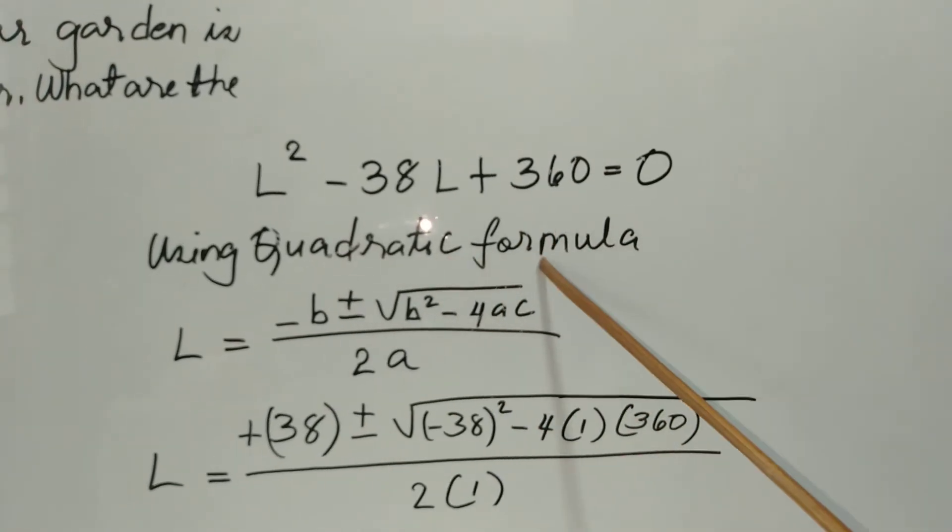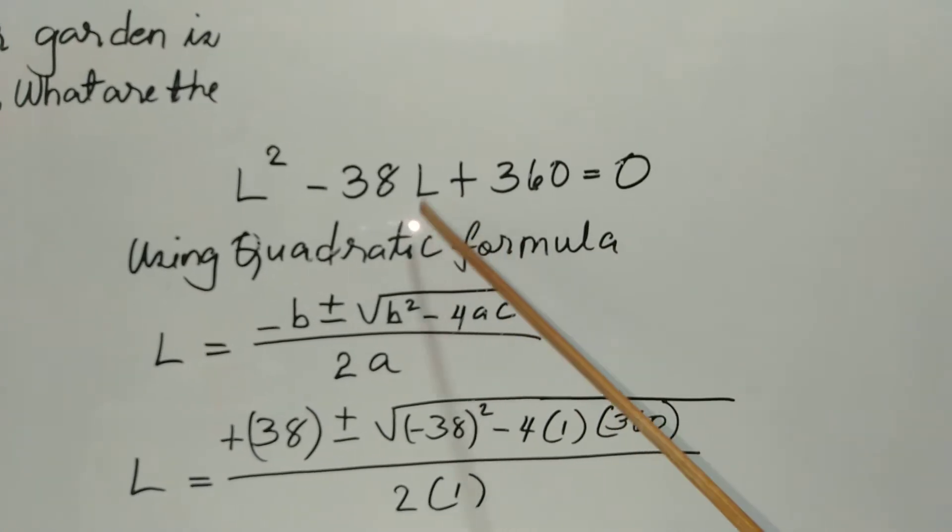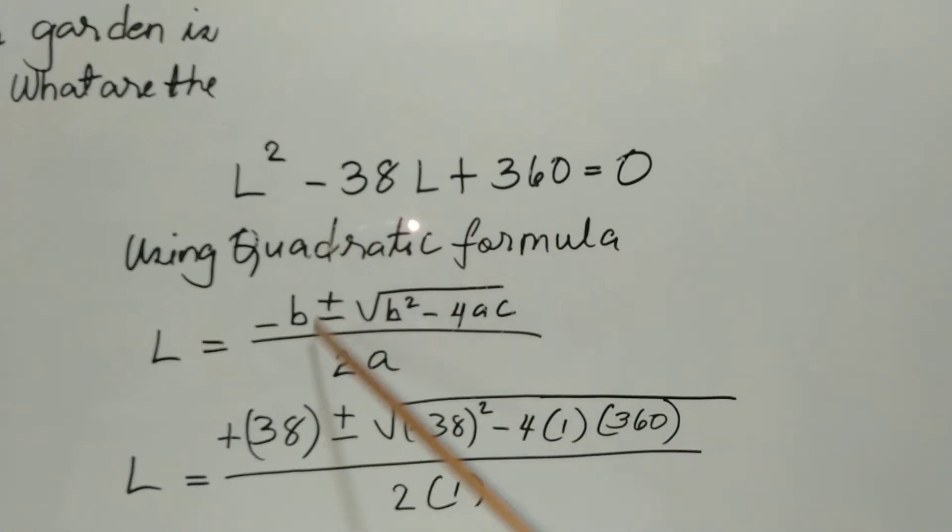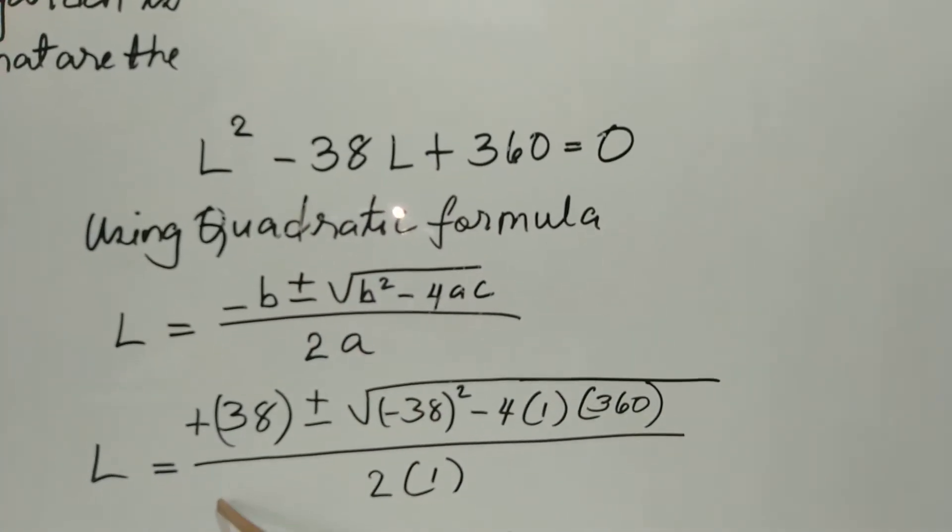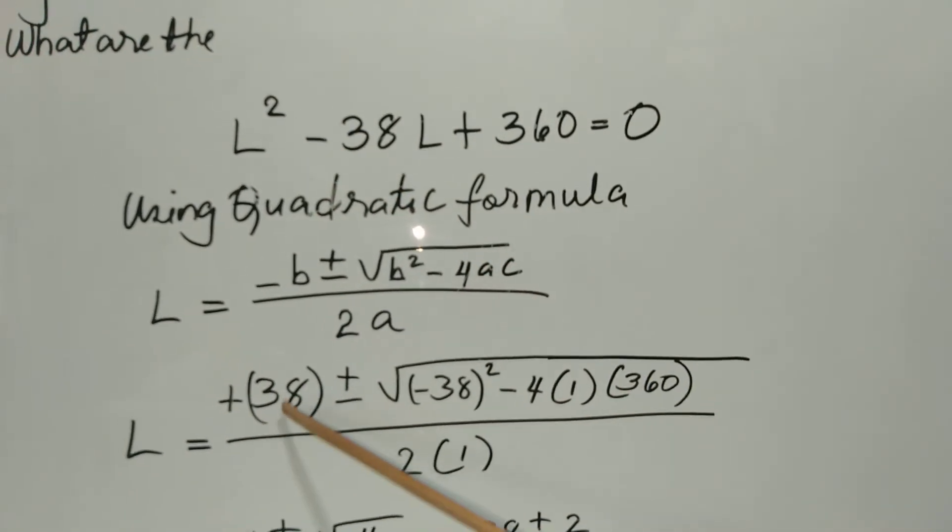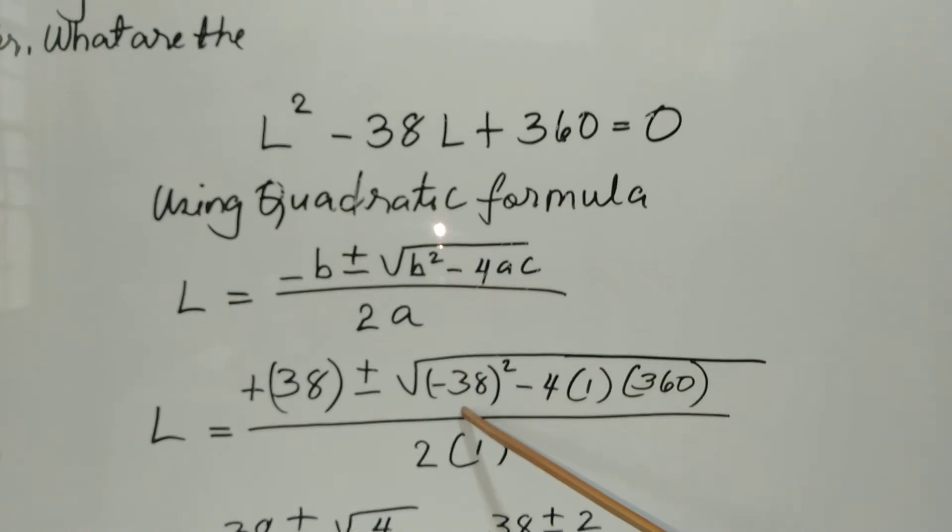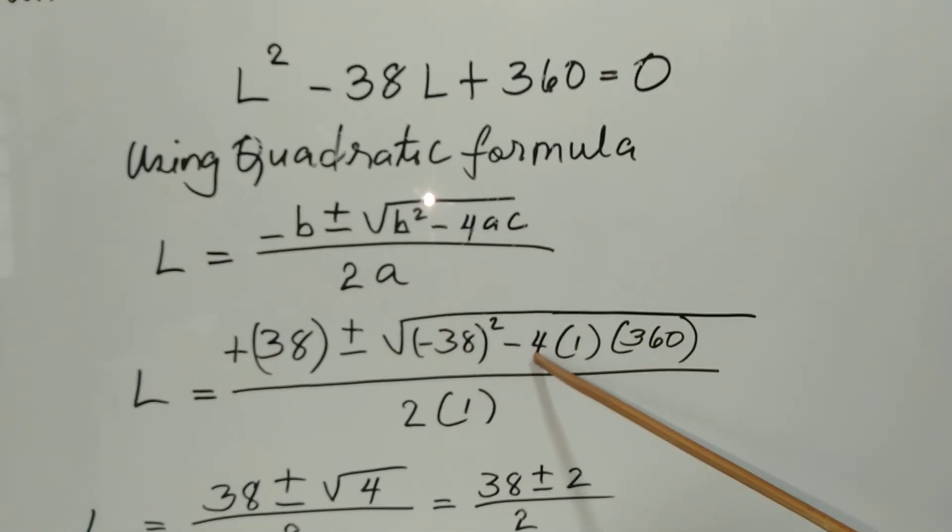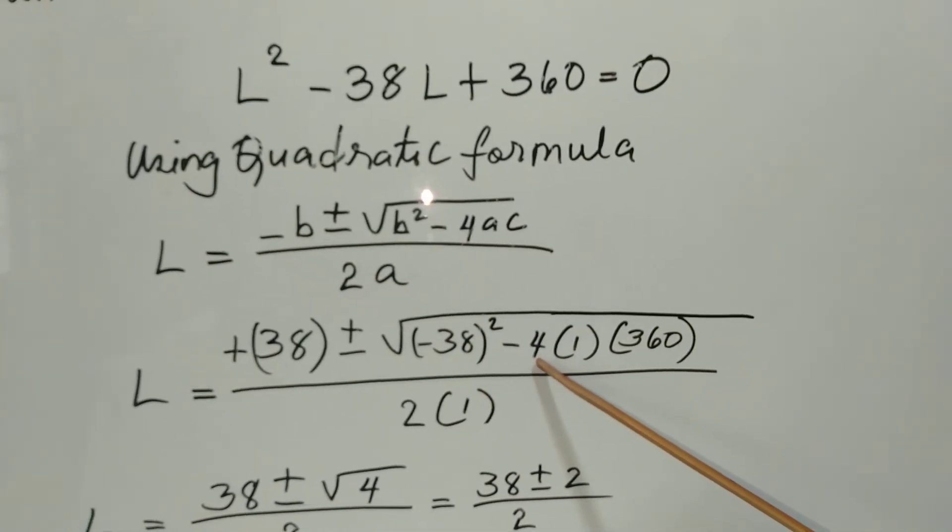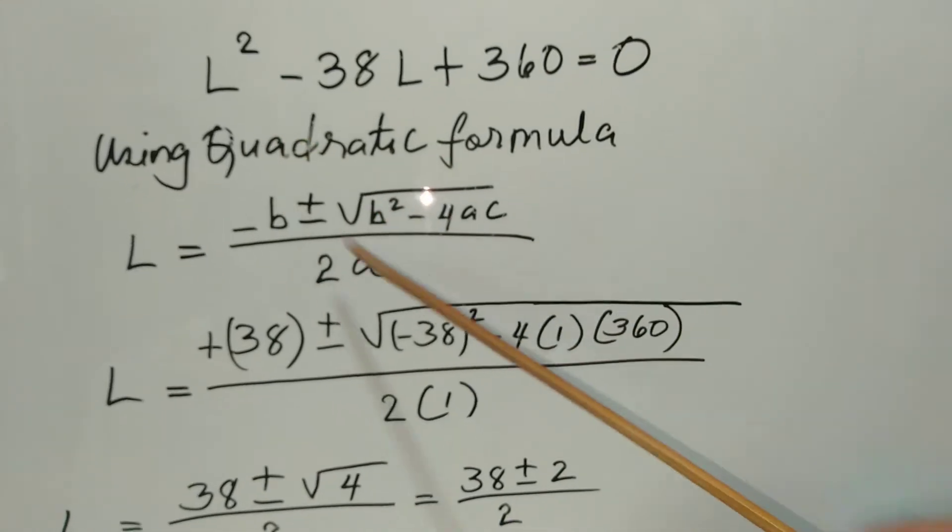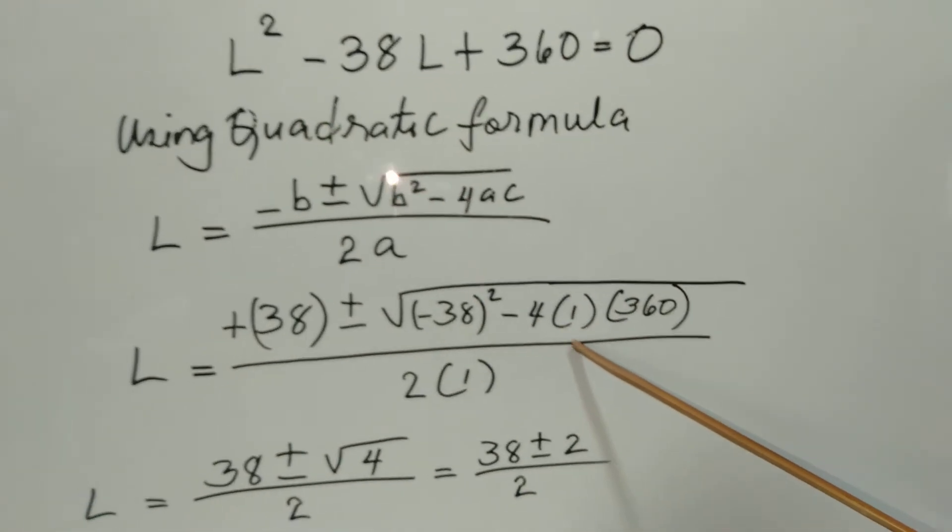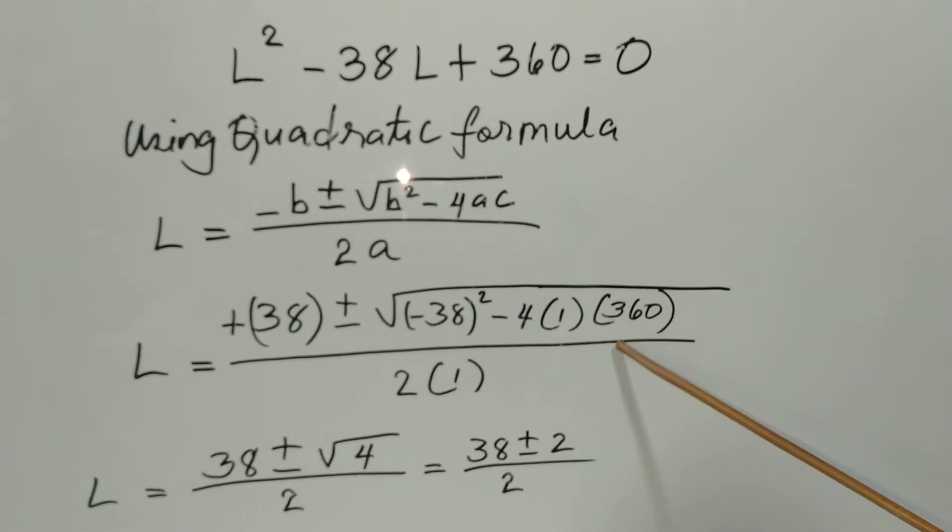We just substitute the value from this quadratic equation. We have L equals negative negative, positive 38, plus or minus, we substitute B squared: negative 38 squared minus 4 times 1, the first coefficient, times 360, the constant term.